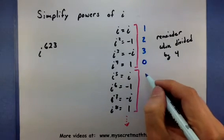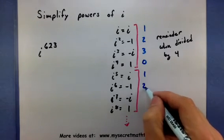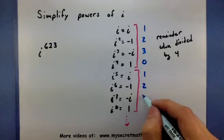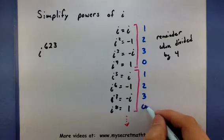5 divided by 4, remainder of 1. 6 divided by 4, remainder of 2. 7 divided by 4, remainder of 3. And 8 divided by 4, remainder of 0.